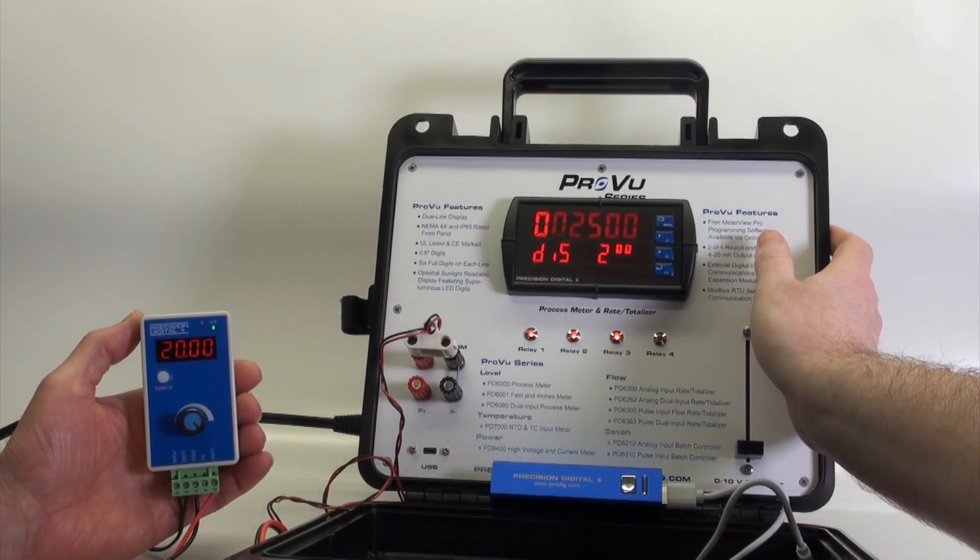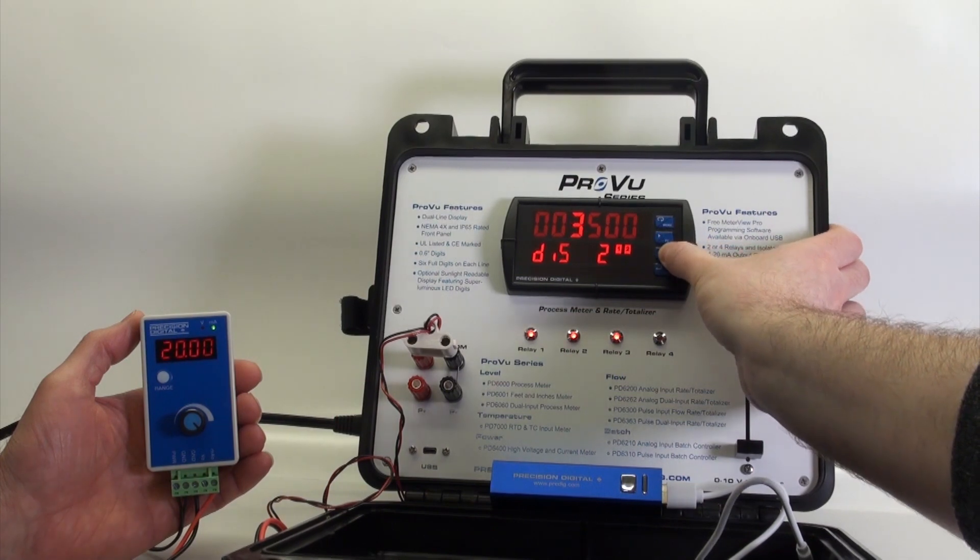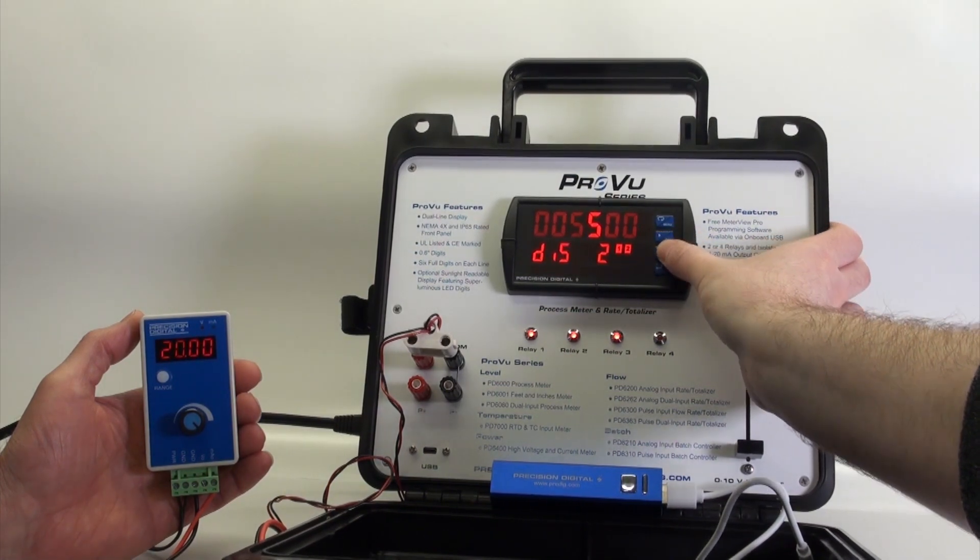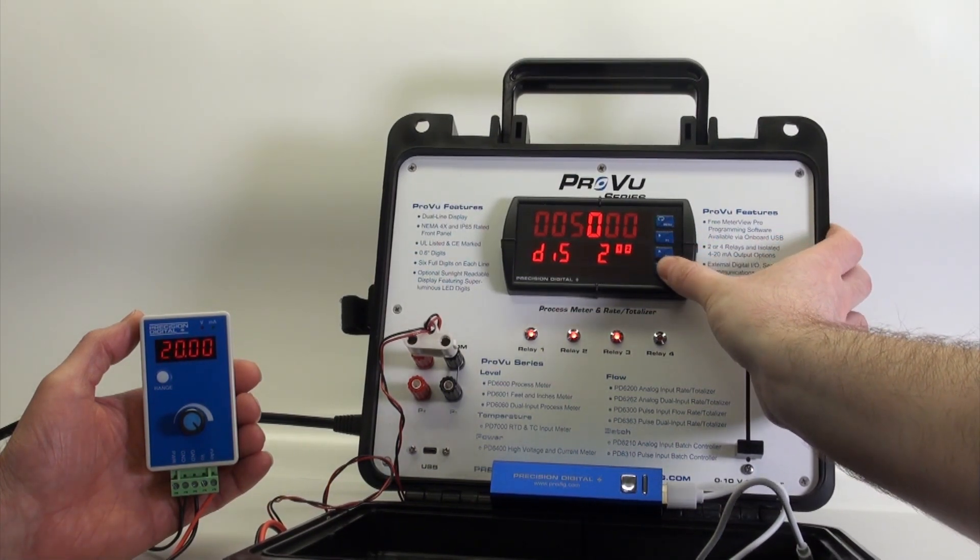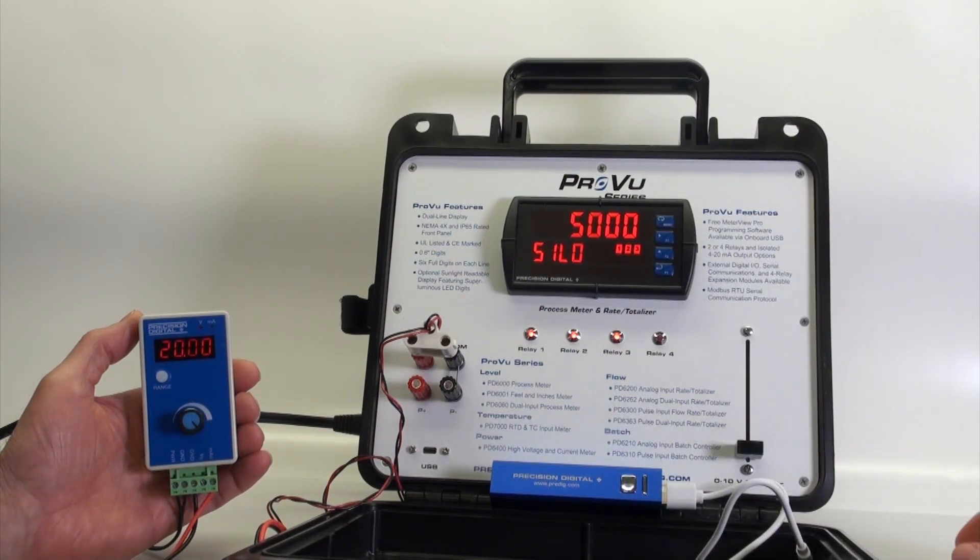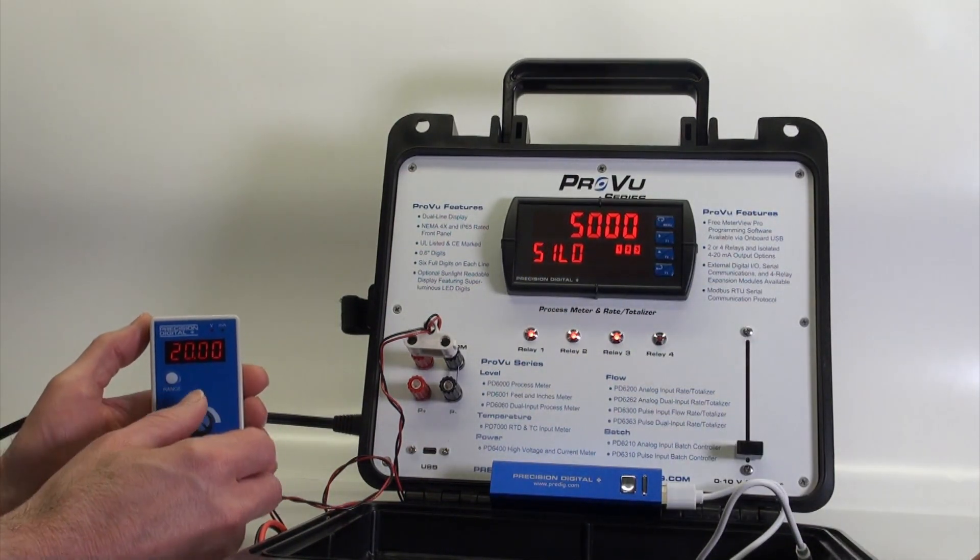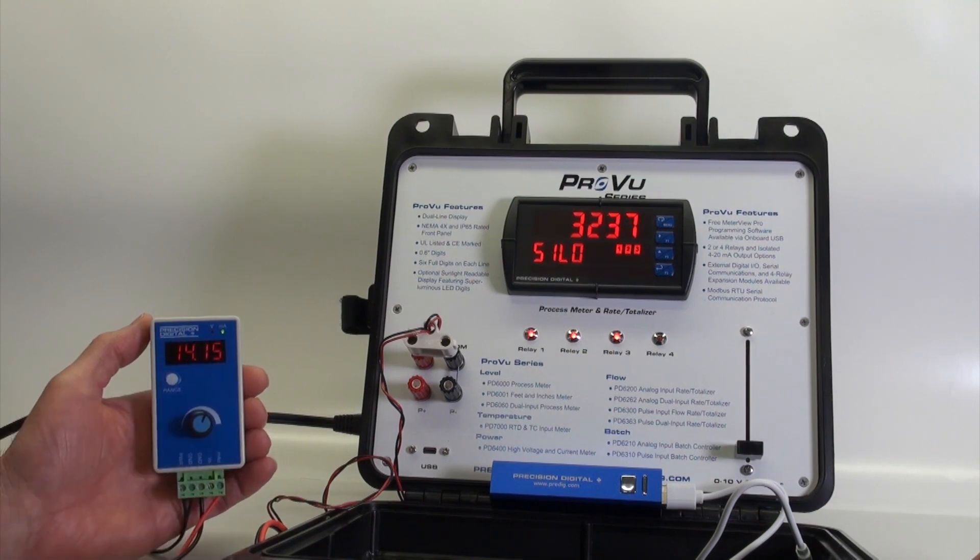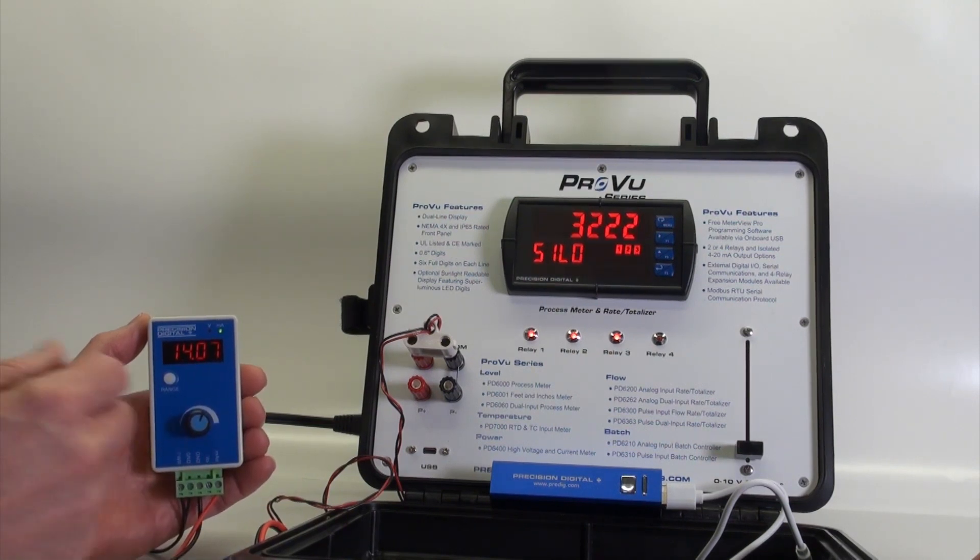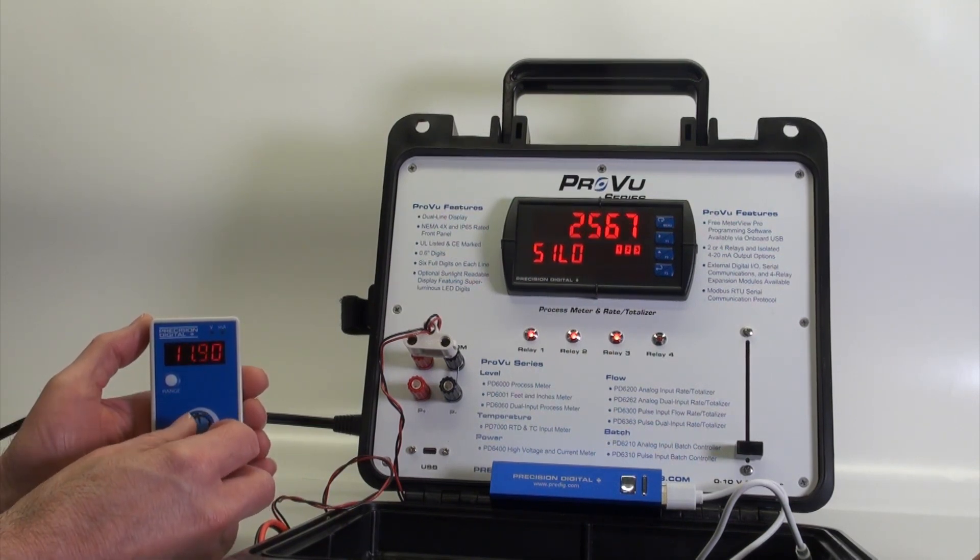Now we'll change this to read 5,000, and there you go. PD9502, simple and easy way to calibrate all of your 4 to 20 milliamp devices.